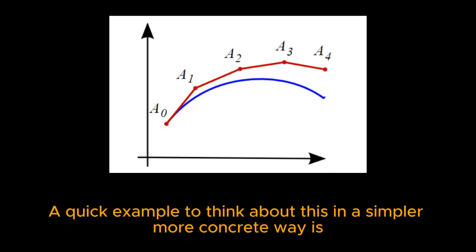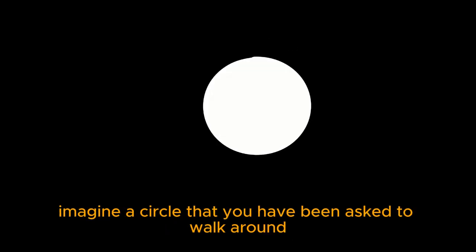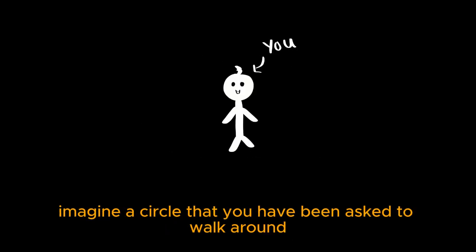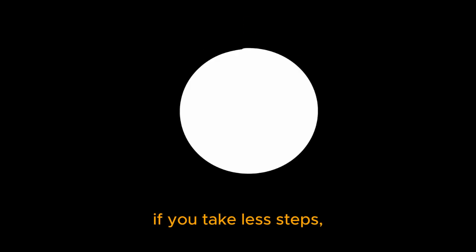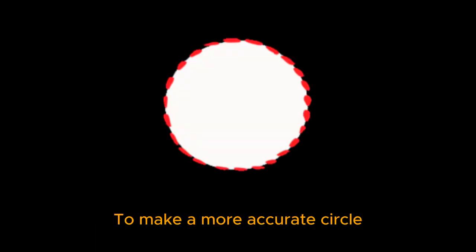A quick example, to think about this in a simpler, more concrete way, is imagine a circle that you have been asked to walk around. If you take less steps, for example six, then your path will not be very close to the circle you need to follow. To make a more accurate circle, all you need to do is take more steps with more frequent changes of direction.